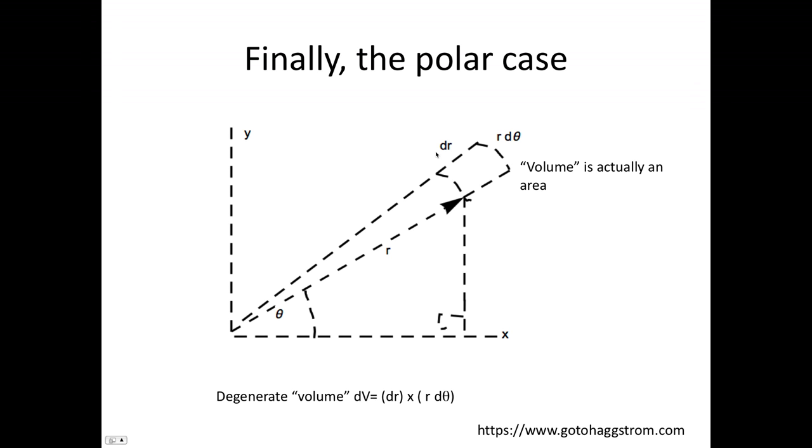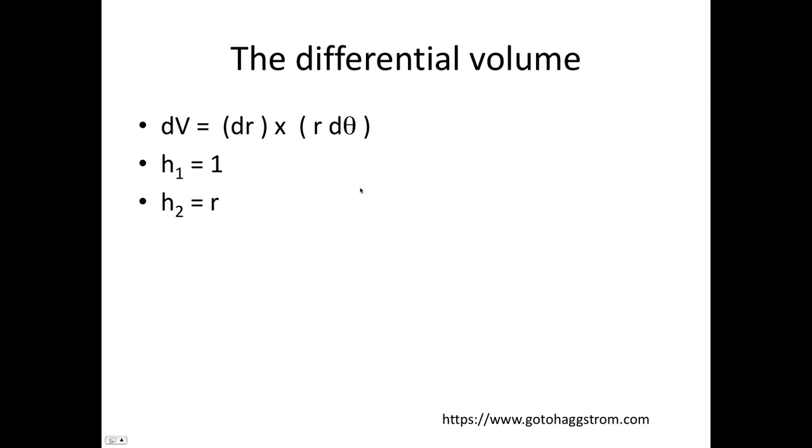Finally, come to the polar case. The volume here is a degenerate volume. It's just an area. And the area is dr times r d theta, which enables us to simply see that h1 is 1 and h2 is r.